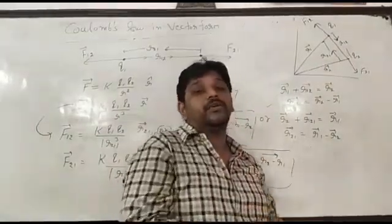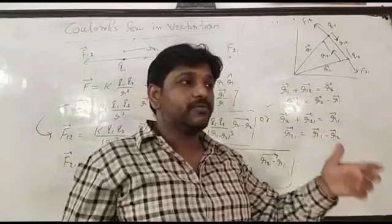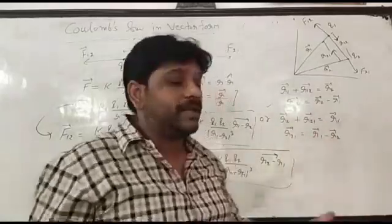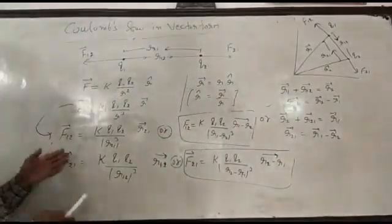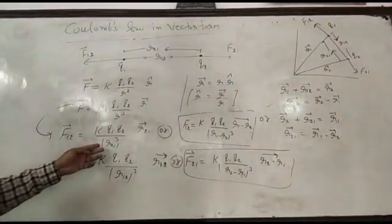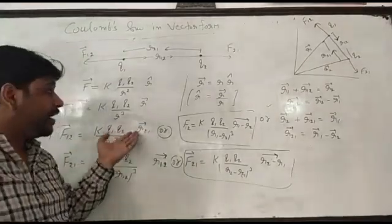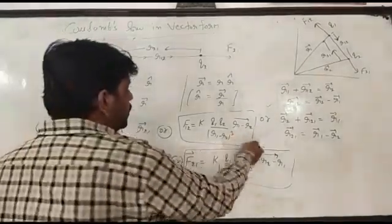That's r1, r2 in vector form in terms of i, j, k like this. So as we know, F12 in vector form, k q1 q2 upon r21 cube times r21 in vector form. The value of r21, let's take from this, so F12 equal to k q1 q2, and the value of r21 is r1 minus r2.